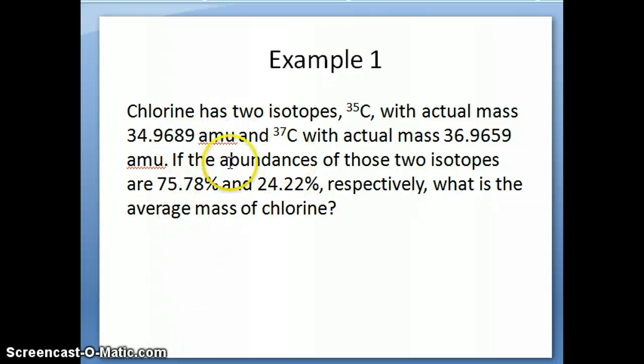So, here's an example of how this works. In this example, we have chlorine, which has two isotopes. Chlorine-35, which actually has a mass of 34.9689 amu when determined using a mass spec. And chlorine-37, which has a mass of 36.9659 amu.